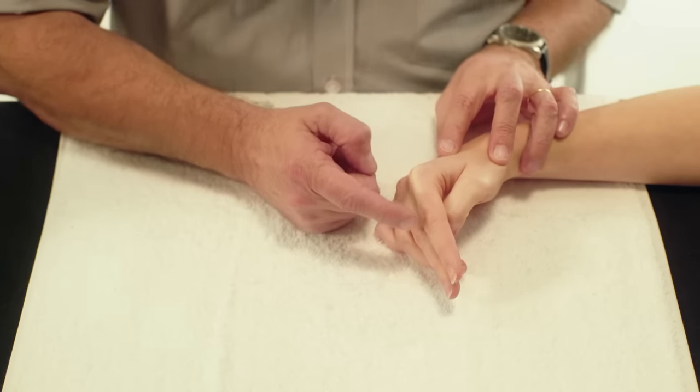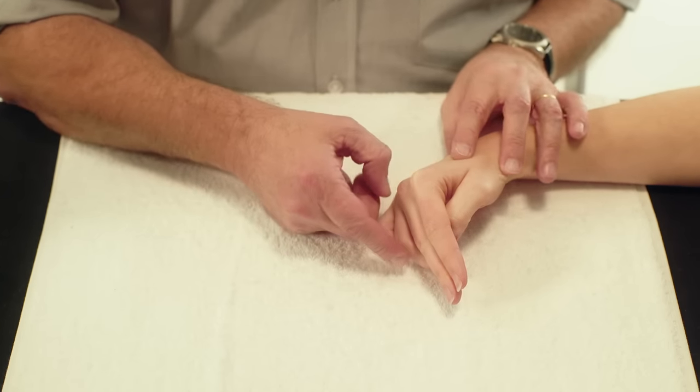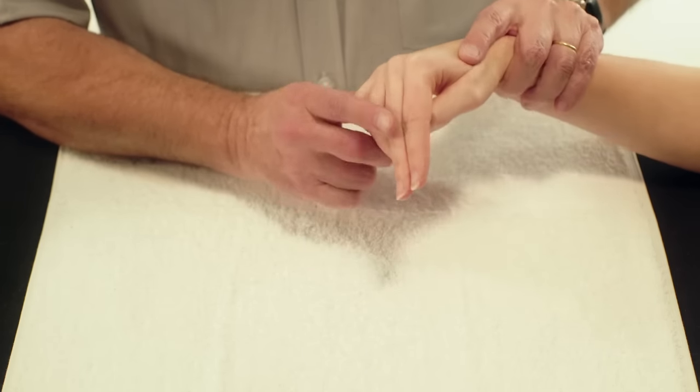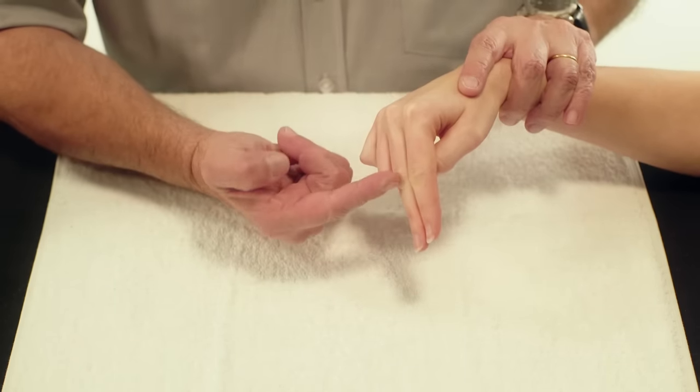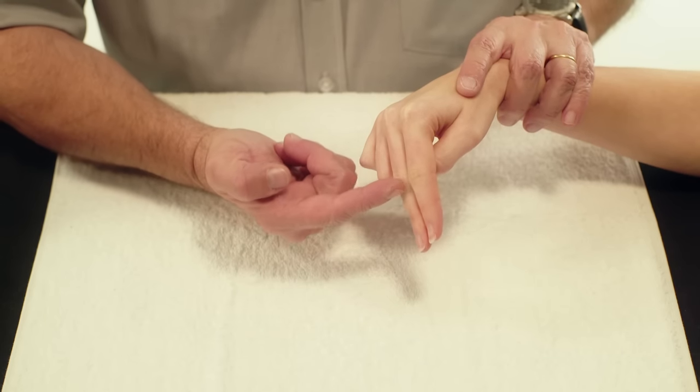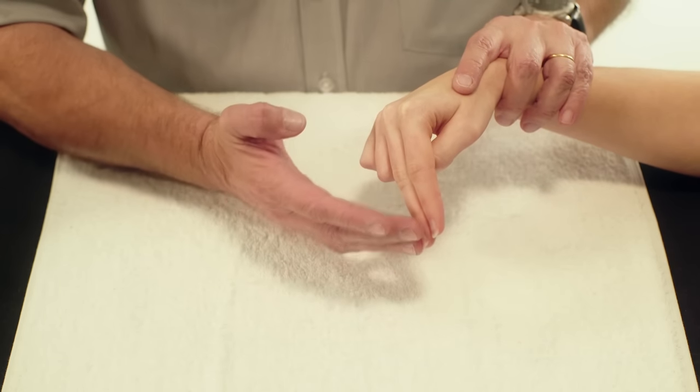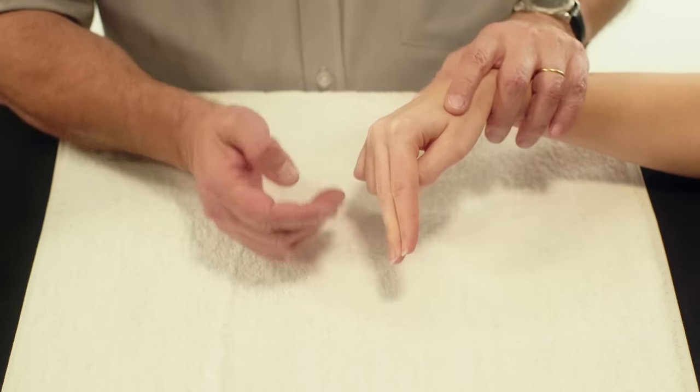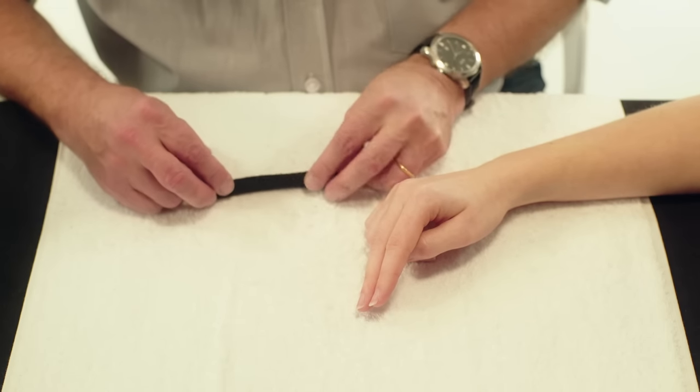Before moulding, make sure that the MCP joints of the concerned fingers are in flexion. This ensures that the PIP joints are at the same level while moulding. Fold the Orphicast in half lengthwise.